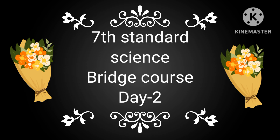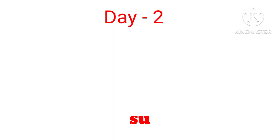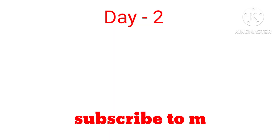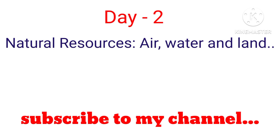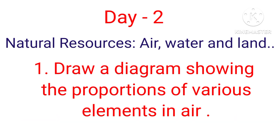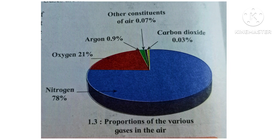7th Standard Science Bridge Course, Day 2. Natural Resources: Air, Water and Land. Draw a diagram showing the proportion of various elements in air — the proportion of the various gases in the air and other constituents of air.